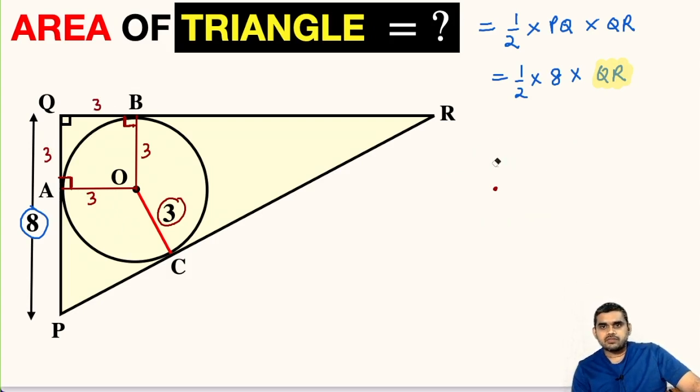Now if we see, the length PQ is 8 units and QA we found is 3 units. So P to A, this distance will be 8 minus 3, 5 units.